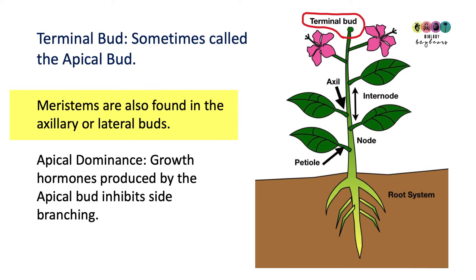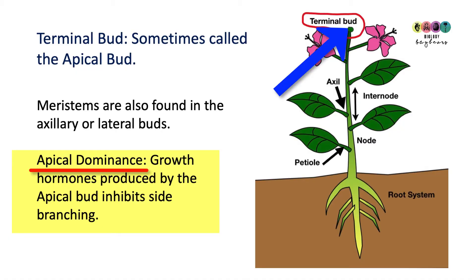Often these are dormant. The meristems are inhibited from working or undergoing mitosis due to apical dominance. This is when the terminal bud or apical bud produces growth regulators — chemicals — that are basically inhibiting the meristematic tissue from undergoing mitosis. Remove that apical bud and you remove apical dominance, and it results in a low bushy plant.